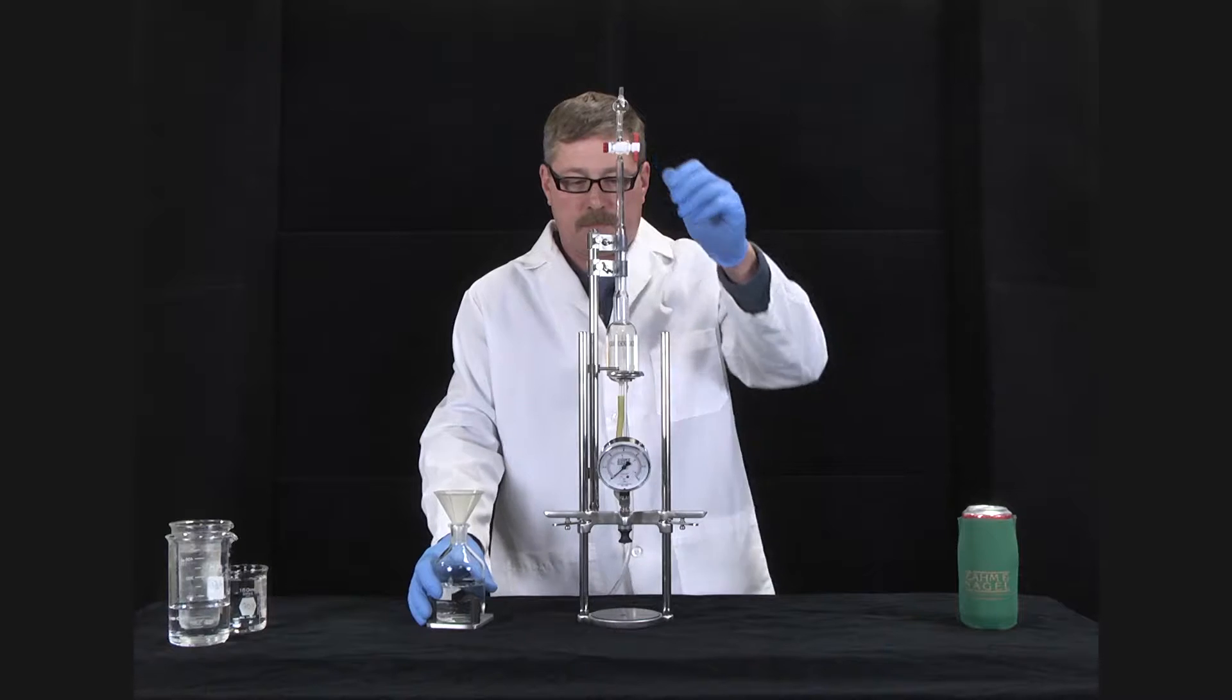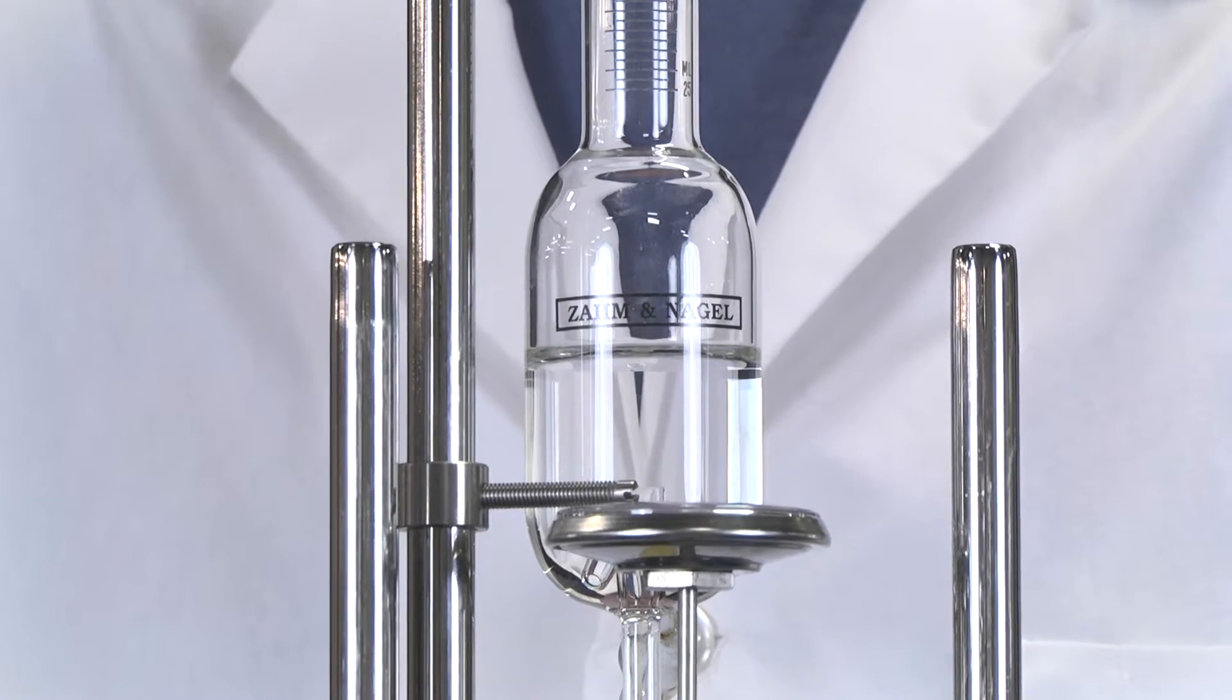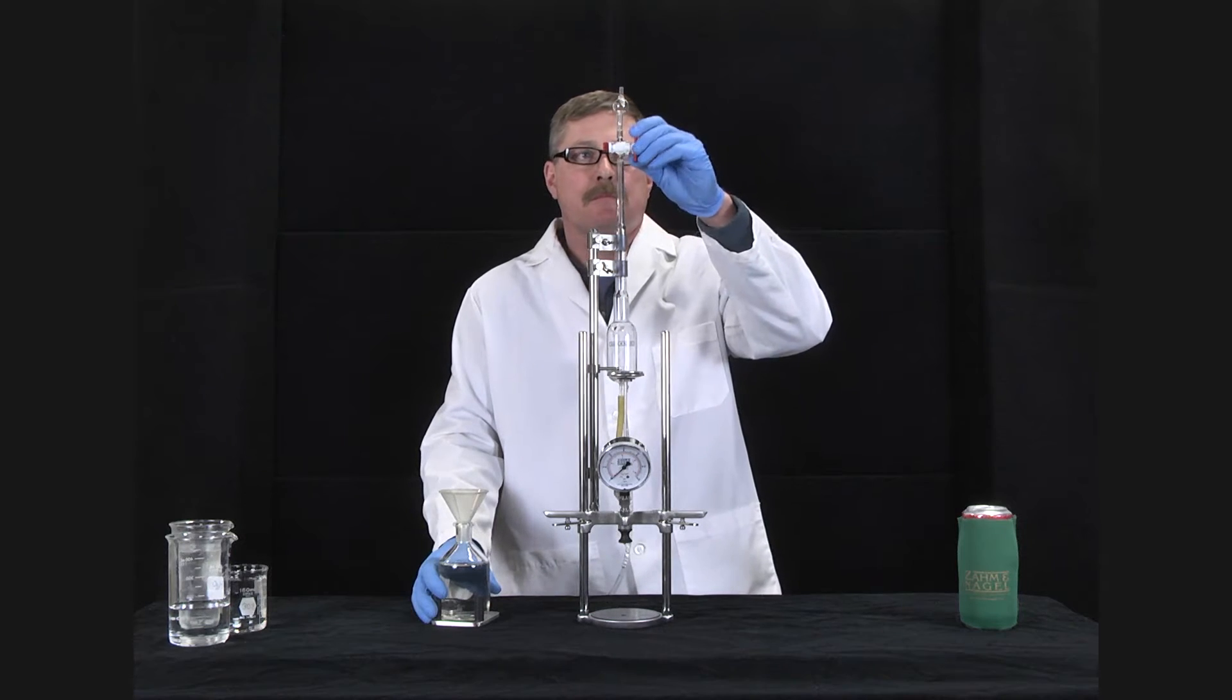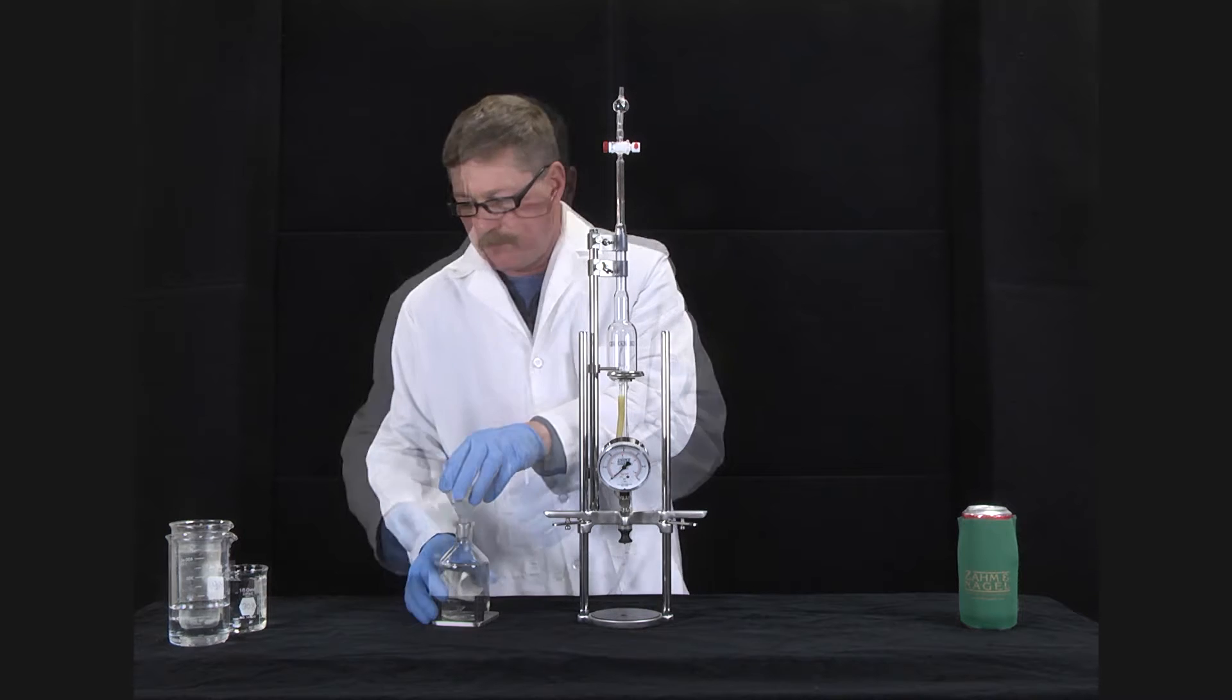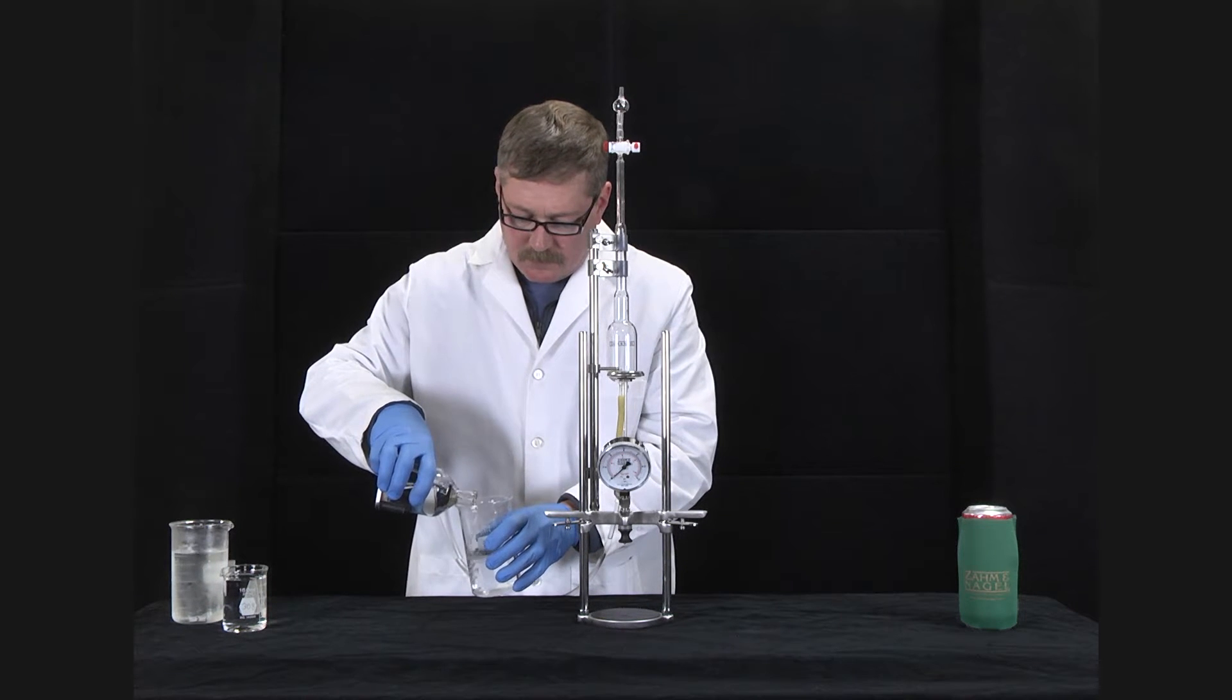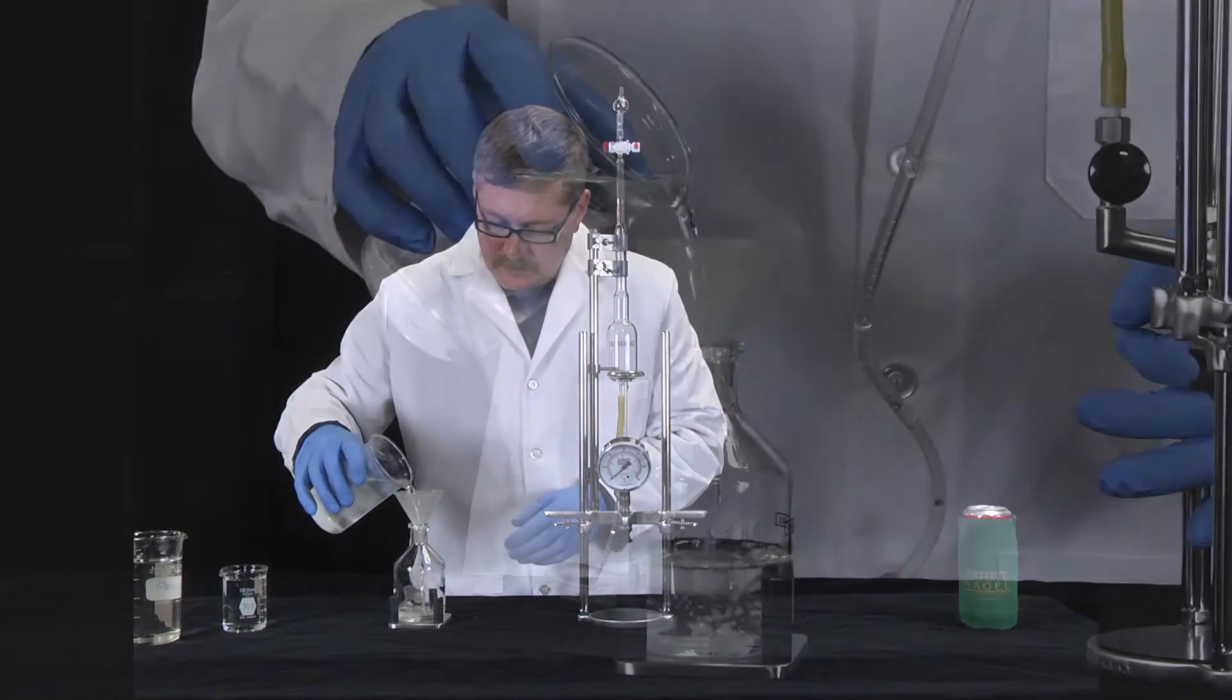Open the burette cock and allow the water to return to the level bottle. Close the burette cock and discard. Replace the water in the level bottle with caustic solution.